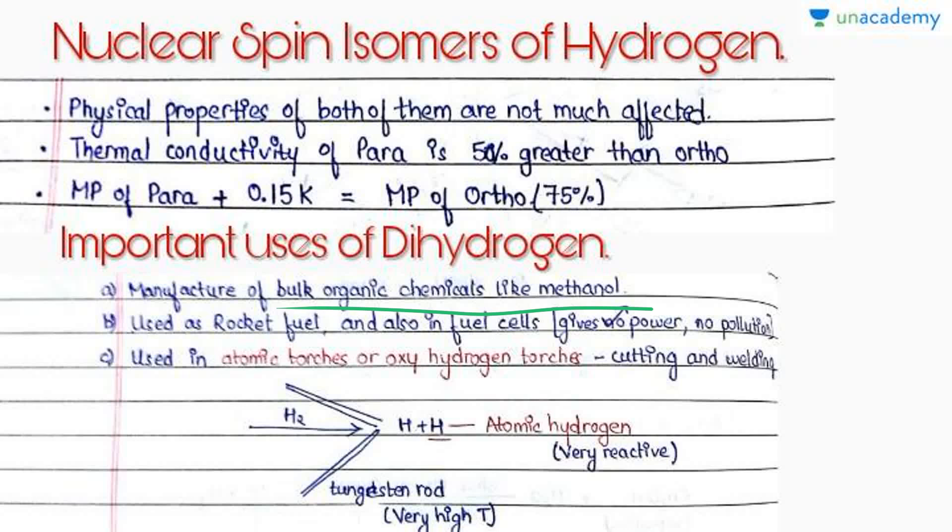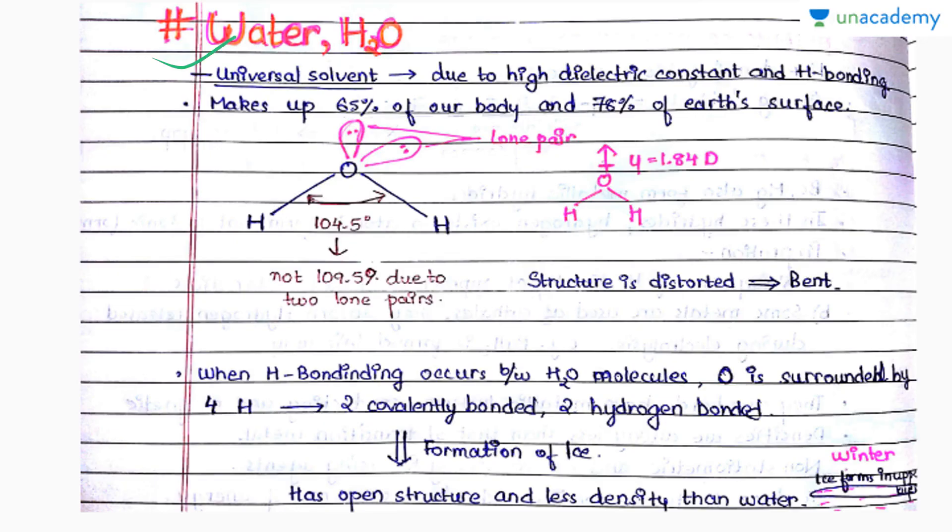It is used in rocket fuel and also in fuel cells because it gives high power and causes no pollution. It is used in atomic torches or oxy-hydrogen torches. We pass hydrogen through tungsten rod at very high temperature, which results in dissociation of hydrogen gas into atomic hydrogen, which is very reactive. This reaction is so exothermic that the heat produced is sufficient to cut the metal.